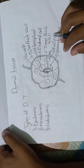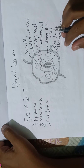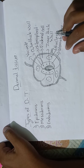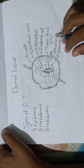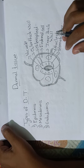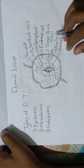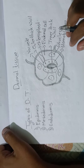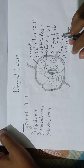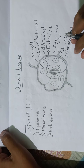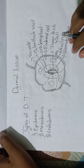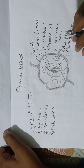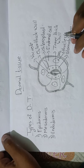Dermal tissue generally consists of types of cells based on their functions and location. It protects the plant from loss of water and mechanical damage like breaking and splitting of branches. Based on their types, dermal tissue is divided into three types.